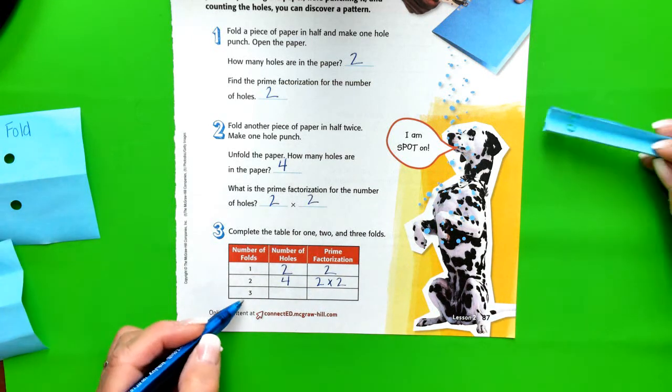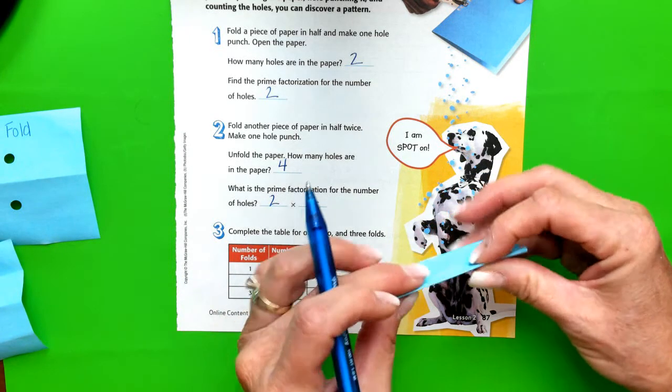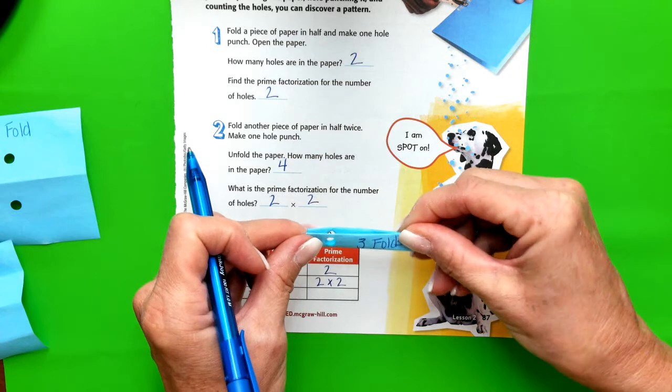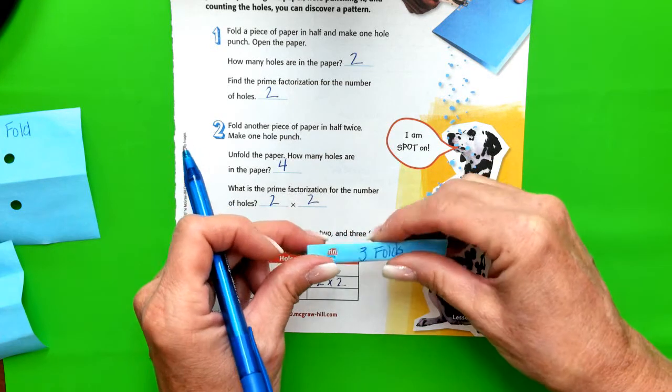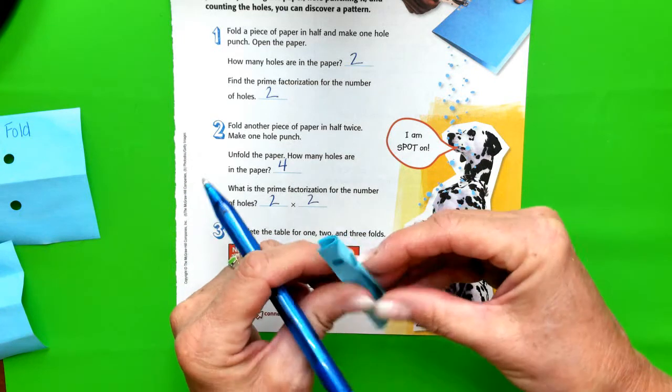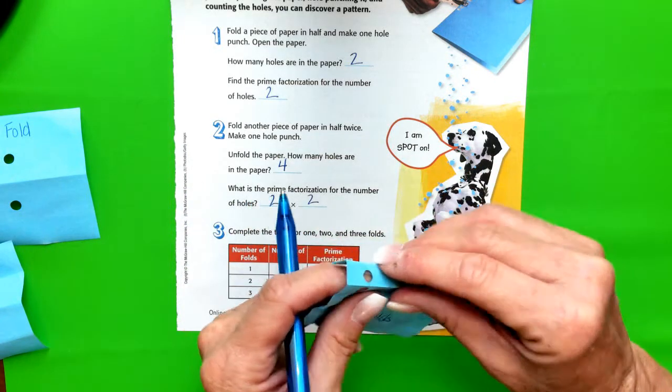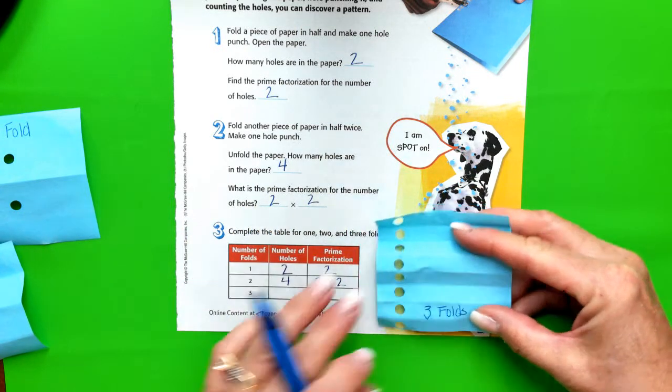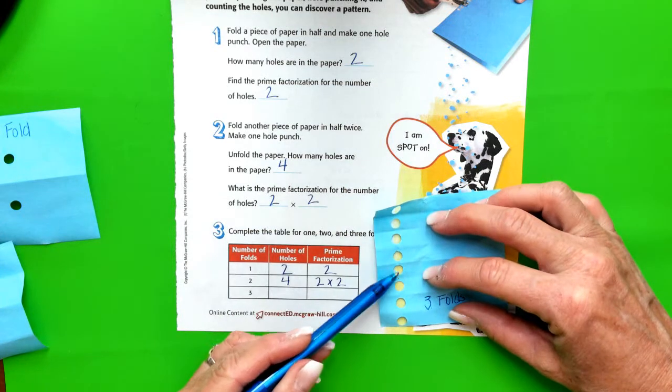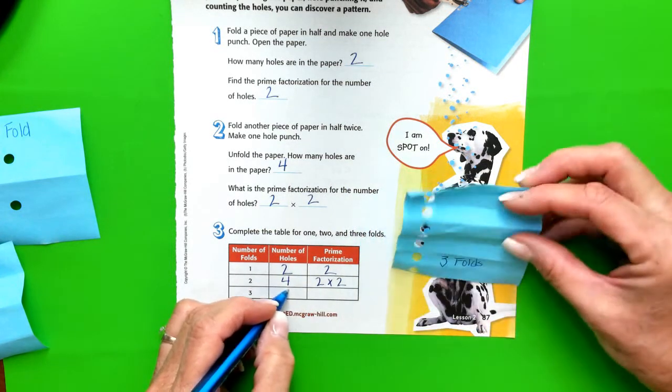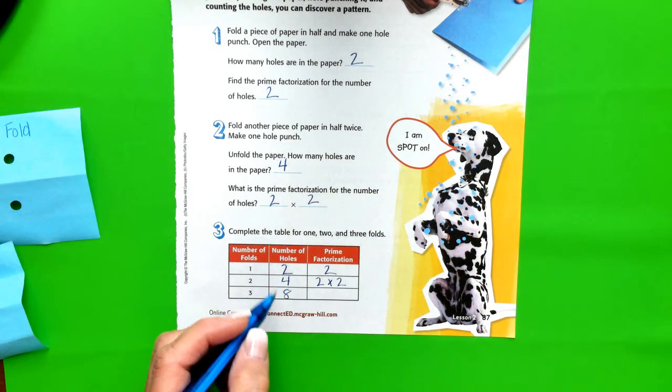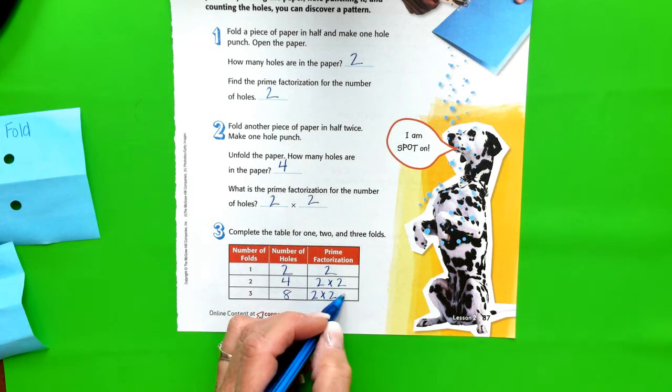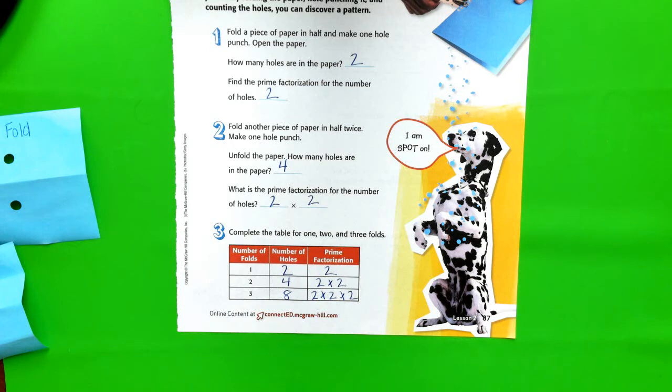So now we're folding three times. So I have folded and folded and folded a third time, and you can see my paper got really tiny, and then I hole punched it once. So then if I can peel this open, we can count all of my... oh, my sticky has stuck together. Let's see if we can count them. We have one, two, three, four, five, six, seven, eight. We have eight, so to factor eight, we have two times two is four times two is eight.